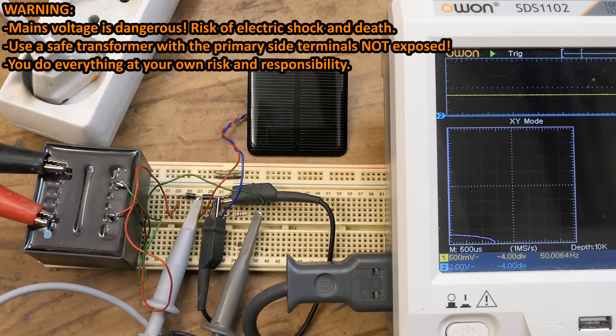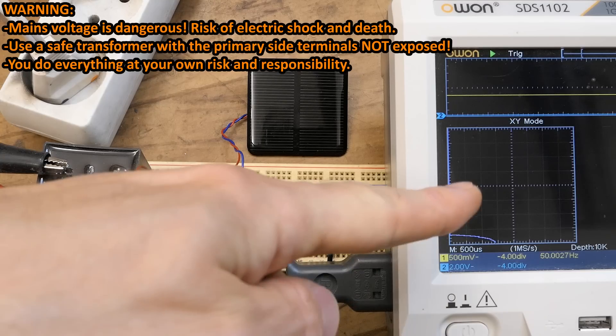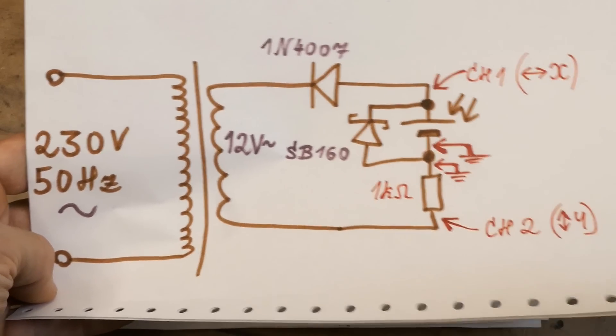Using just a very simple circuit with a transformer, two diodes, a resistor and an oscilloscope in XY mode. And let's take a look at the schematic of it.